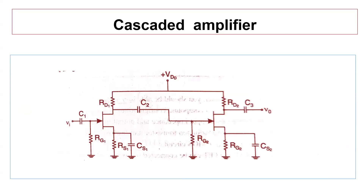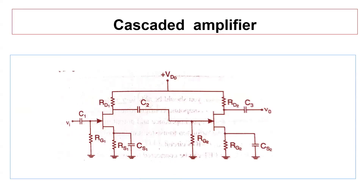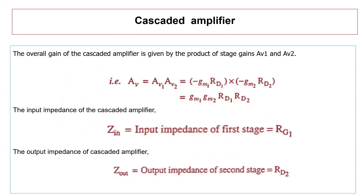First we discuss the cascaded amplifier. This is the circuit diagram — we have two FET amplifiers with the same configuration, coupled using a coupling capacitor C2, and bypass capacitors C1, C3, and CS. The remaining resistors use simple biasing for the FET amplifier. The overall gain of the cascaded amplifier is given by two stages: the first stage and the second stage, which is the product of the gain of each stage.